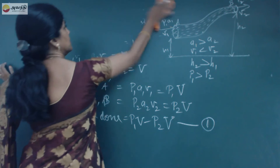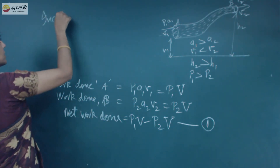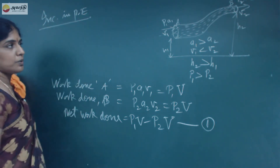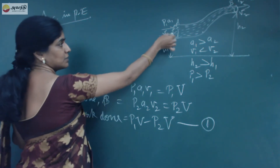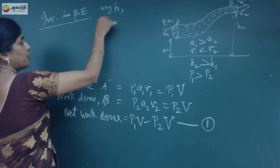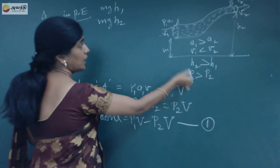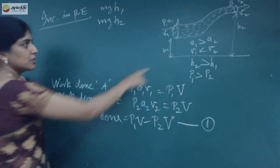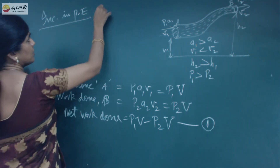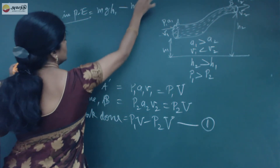We will now calculate the increase in kinetic energy and increase in potential energy. The potential energy at point A is MgH1 and at point B is MgH2. So the increase in potential energy is MgH1 minus MgH2.